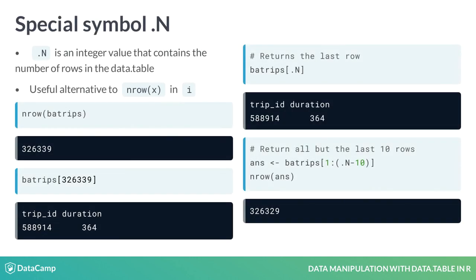Data table contains a few handy special symbols or variables that make many operations efficient. One such symbol is .N which is an integer vector of length 1. When used in the i argument it returns the total number of rows in the data table.